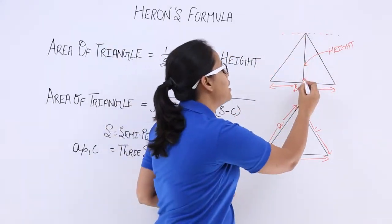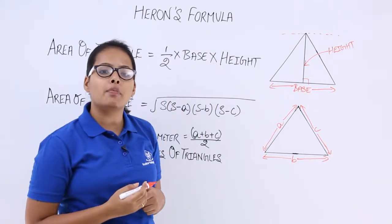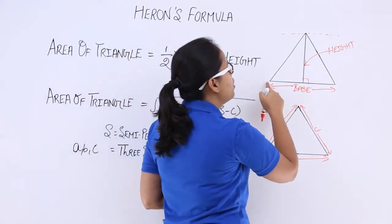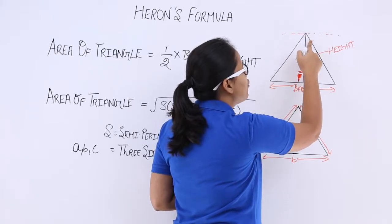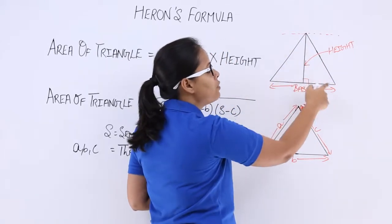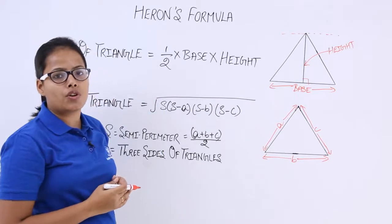This perpendicular is the height of this triangle. And what is the perimeter? Perimeter is when you start walking along the sides of a triangle, so this distance will become the perimeter of this triangle.